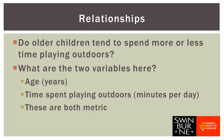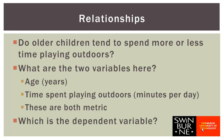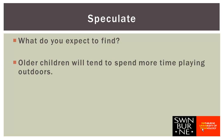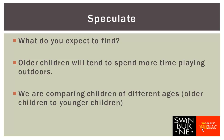Both of those are metric variables. What we need to decide is which one is the dependent variable, and the way we will approach this is to speculate about what we expect to find. Personally, I expect that older children will tend to spend more time playing outdoors. Implicit in that expectation, I am comparing older children to younger children, which tells me that age is the independent variable and time spent playing outdoors is the dependent variable.